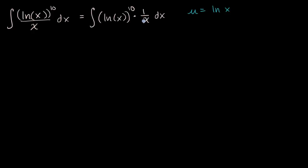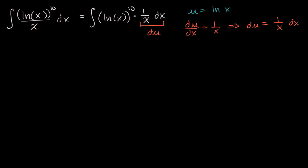In this case it's the exact derivative. And so we say du/dx is equal to one over x, which means that du is equal to one over x dx. And so here we have it — this right over here is du, and this right over here is our u. This nicely simplifies to the integral of u to the 10th power du.